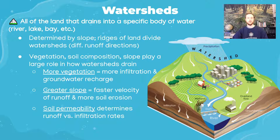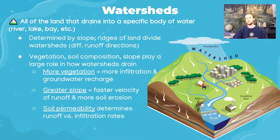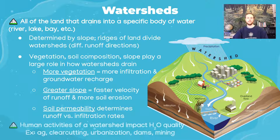Soil permeability affects the rate at which water runs off the watershed and into the central body of water. It may also impact the kinds of pollutants being gathered or the sediments being washed in.